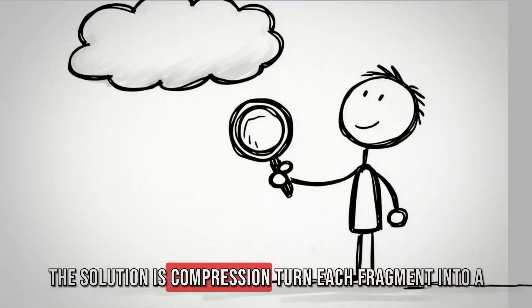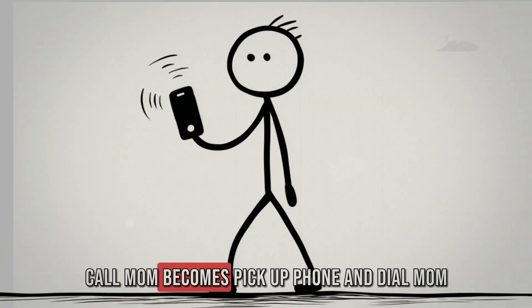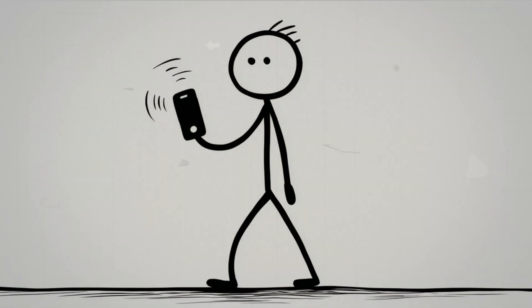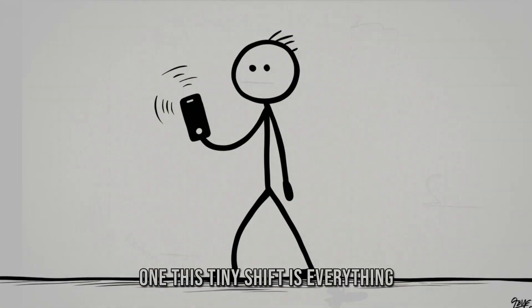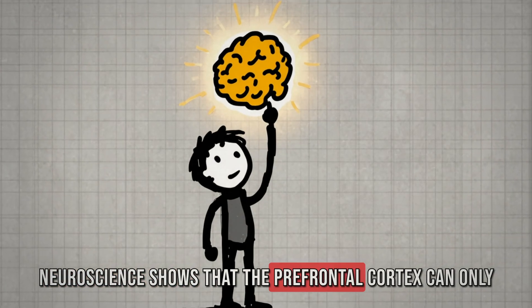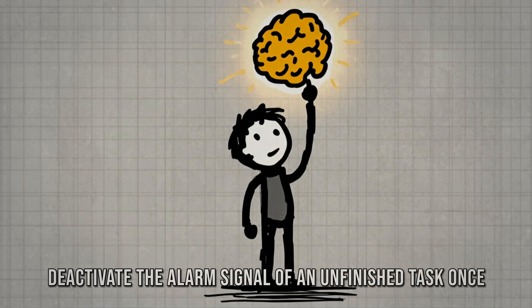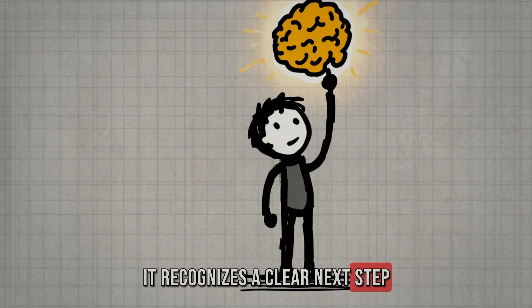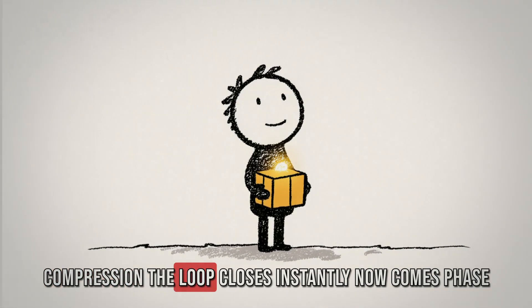The solution is compression. Turn each fragment into a clear, concrete next step. Call mom becomes pick up phone and dial mom. Finish project becomes open PowerPoint and design slide one. This tiny shift is everything. Neuroscience shows that the prefrontal cortex can only deactivate the alarm signal of an unfinished task once it recognizes a clear next step. Without compression, the loop stays open. With compression, the loop closes instantly.